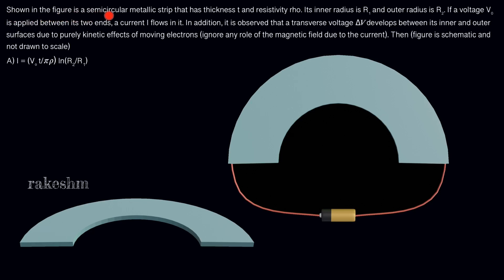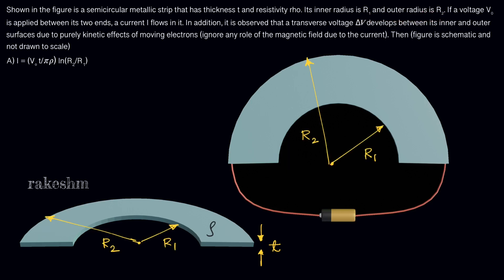Shown in the figure is a semi-circular metallic strip that has thickness t and resistivity rho. We can see the semi-circular metallic strip here. Its inner radius is R1 and outer radius is R2.